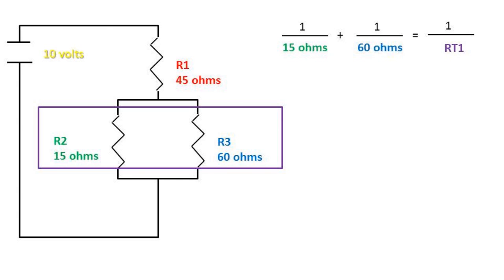Now recall that for parallel, one over resistance two plus one over resistance three equals one over resistance total. So if we multiply one over resistor two times four, we get a common fraction we can add to one over resistor three. After adding the two fractions, we get five over 60 ohms equals one over resistance total one.